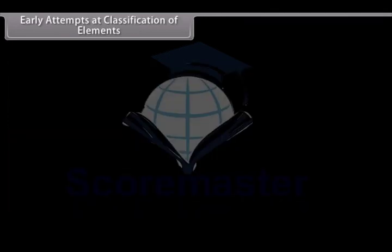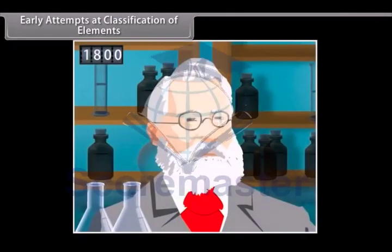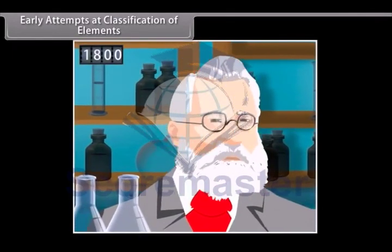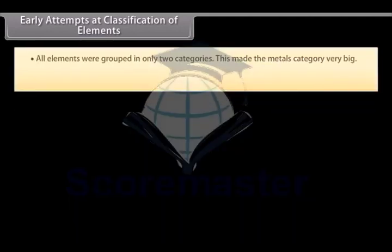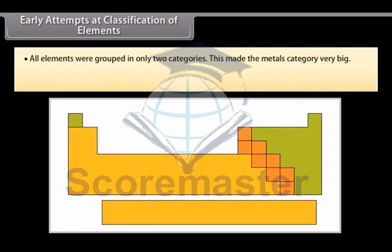Early Attempts at Classification of Elements. In the early days, scientists classified elements purely on the basis of whether they were metals or non-metals. This had its own limitations. All elements were grouped in only two categories. This made the metals category very big.